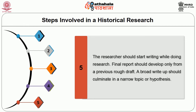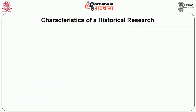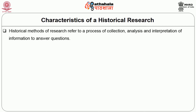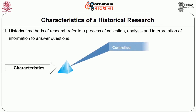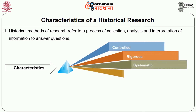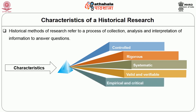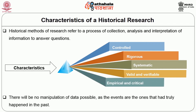A broad write-up should culminate in a narrow topic or hypothesis. The characteristics of historical research are: it must be controlled, rigorous, systematic, valid and verifiable, empirical, and critical. Historical methods of research refer to a process of collection, analysis, and interpretation of information to answer questions. There will be no manipulation of data possible, as the events are the ones that had truly happened in the past.